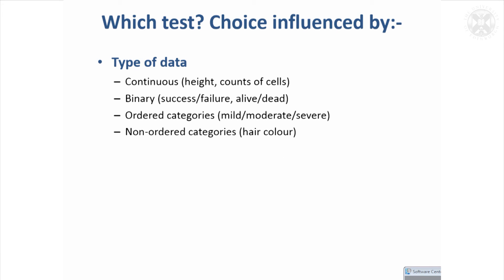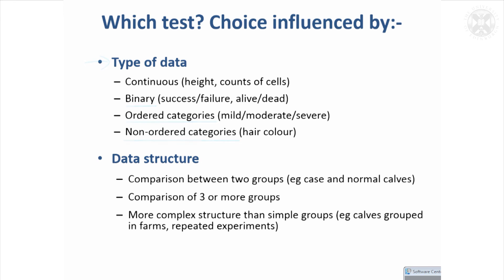There are a whole range of different statistical tests available, all with quite obscure names. Your choice of test depends on the type of data you have — there are different tests for continuous data like height or counts compared to binary or categorical data. Some tests depend on the data structure: for example, where we had two independent groups, a t-test was appropriate, but with three or more groups a different test is needed. There may also be more complex structure, such as calves grouped into farms or repeated experiments, and that also has a bearing on which test to use.